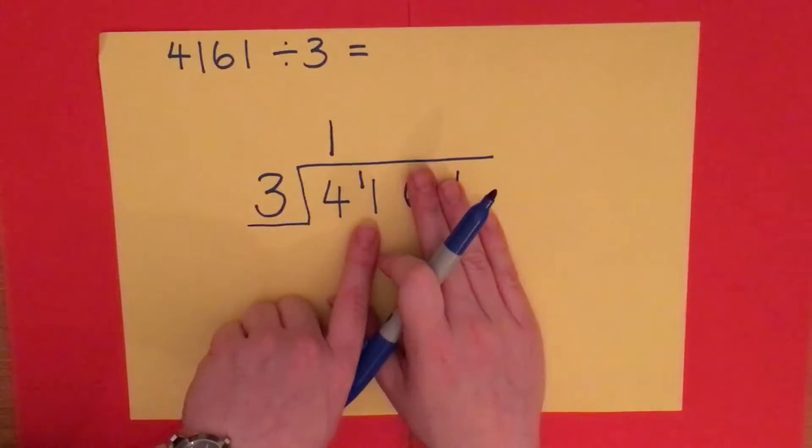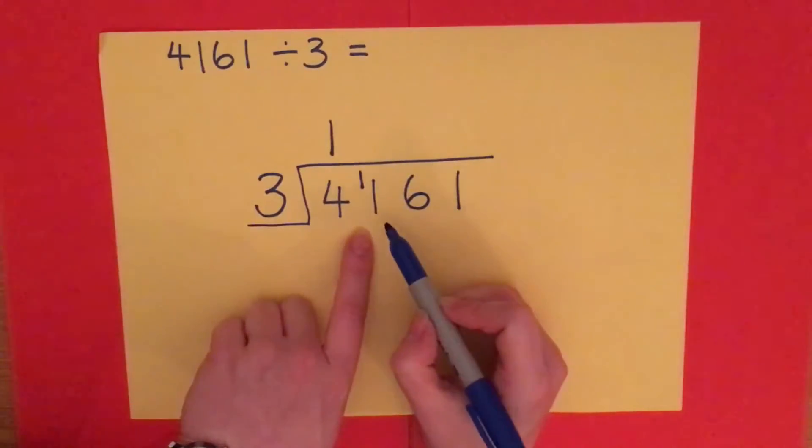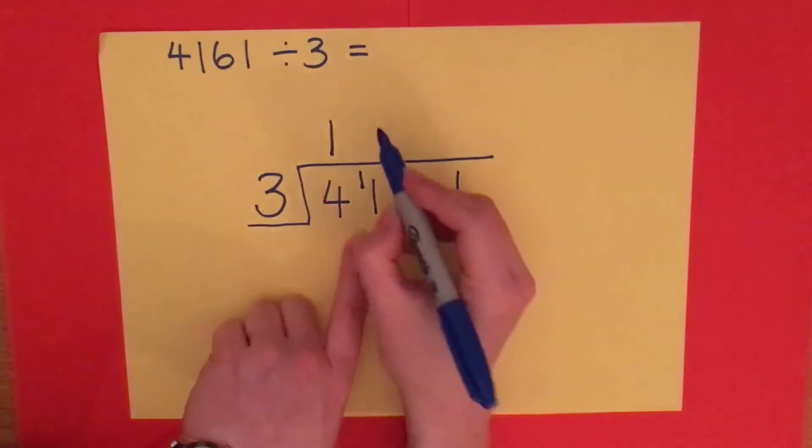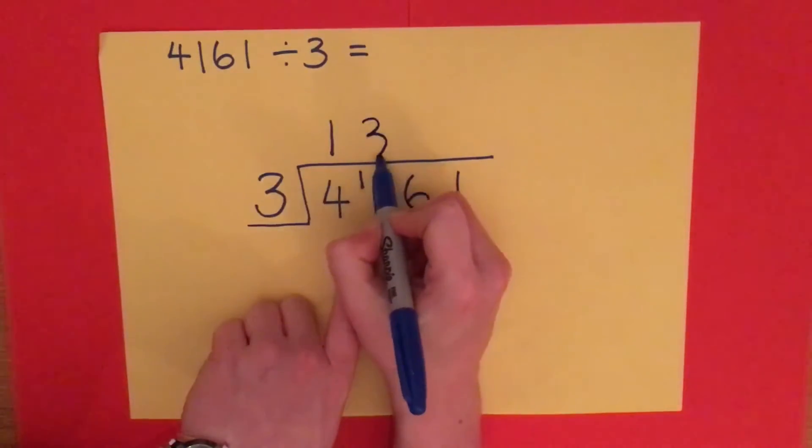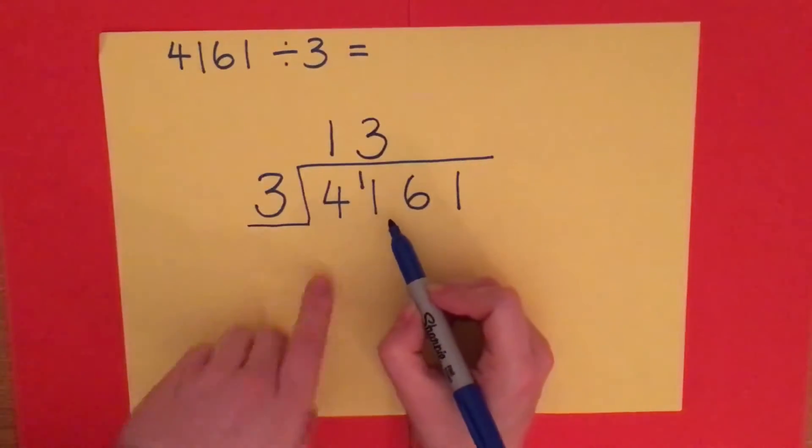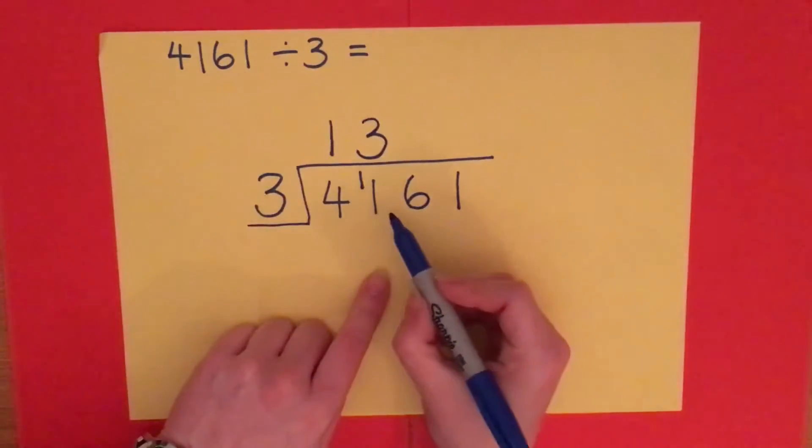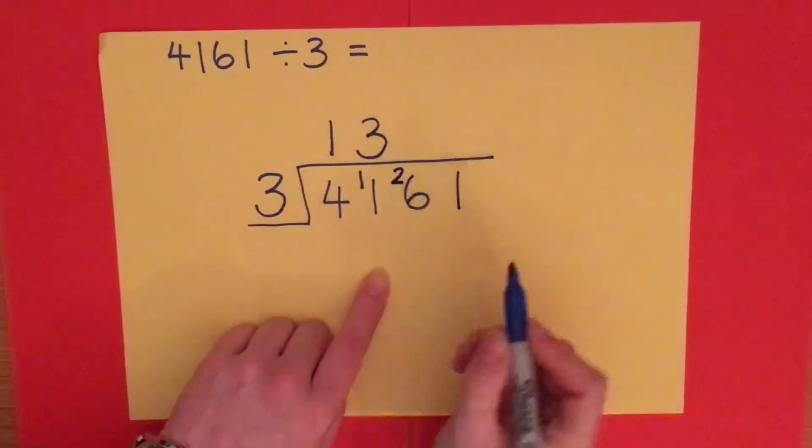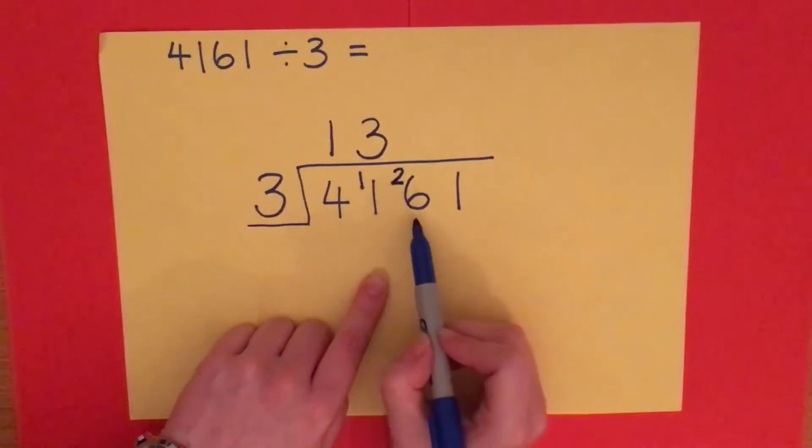The closest I can get is 3 times 3 which is 9. If I do 3 times 4 that makes 12, but I only have 11. I don't have enough to share between 4 people. So I can share these 11 by doing 3 lots of 3. That makes 9, and then I have 2 left over. 9, 10, 11. And that 2 carries across into the next column.